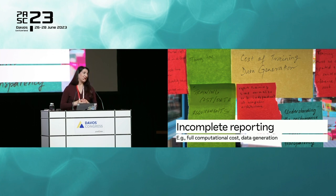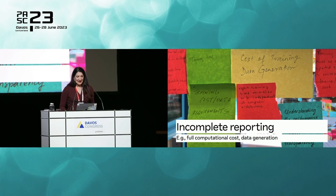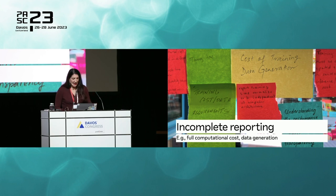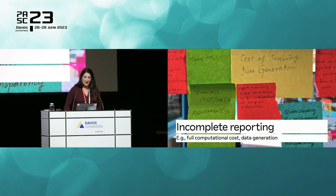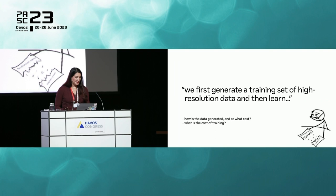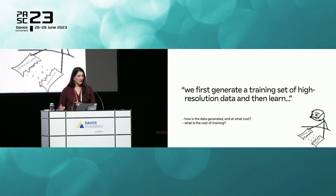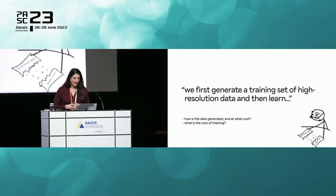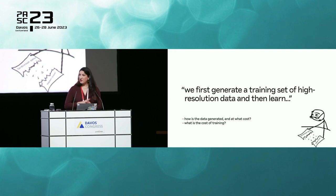Here's another anti-pattern: incomplete reporting. What I want to focus on is failing to report the full computational cost or the cost of data generation to train machine learning models. This situation bothered a lot of the Santa Fe participants, and appeared in many post-it notes. A quote from a paper: 'We first generate a training set of high-resolution data and then learn...' Wait — how is the data generated? At what cost? What is the cost of training that machine learning method? This is not reported in the paper.